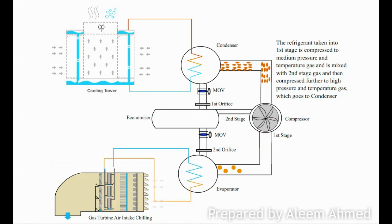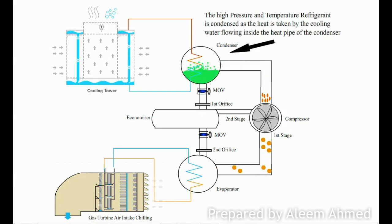The gas is then mixed with economizer gas and goes to the second stage of the compressor, which further increases the pressure and temperature. The high pressure and temperature refrigerant gas is then condensed in the condenser, in which cooling tower water circulates to take away heat from the hot refrigerant gas.